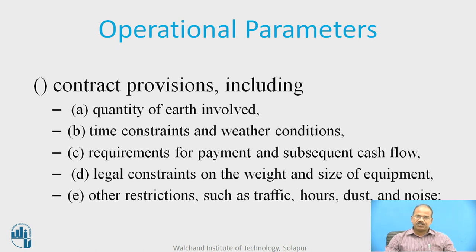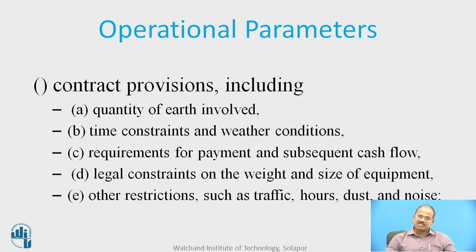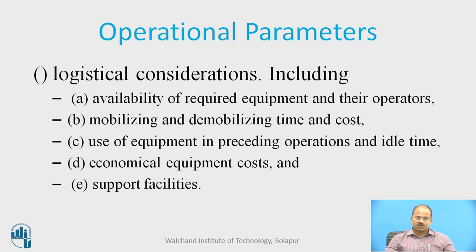The third parameter is contract provisions: quality and quantity of earth involved, time constraints, weather conditions, requirement for payment and subsequent cash flows, legal constraints on equipment weight and size, and other restrictions such as traffic, hours, dust, and noise. The fourth is logistical considerations, involving availability of equipment and operators, mobilizing and demobilizing time, use of equipment in preceding operations, idle time, economical equipment cost, and support facilities.